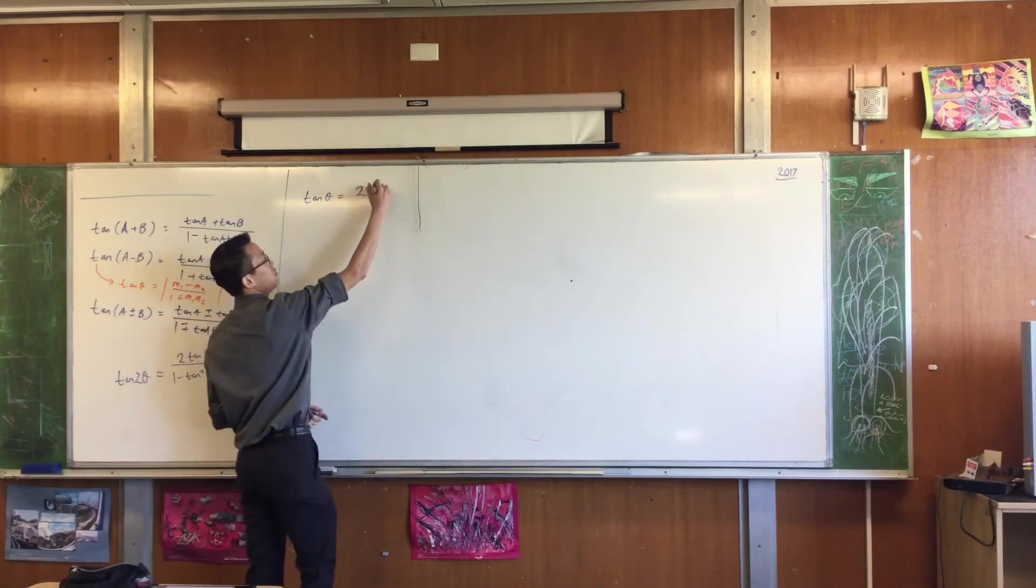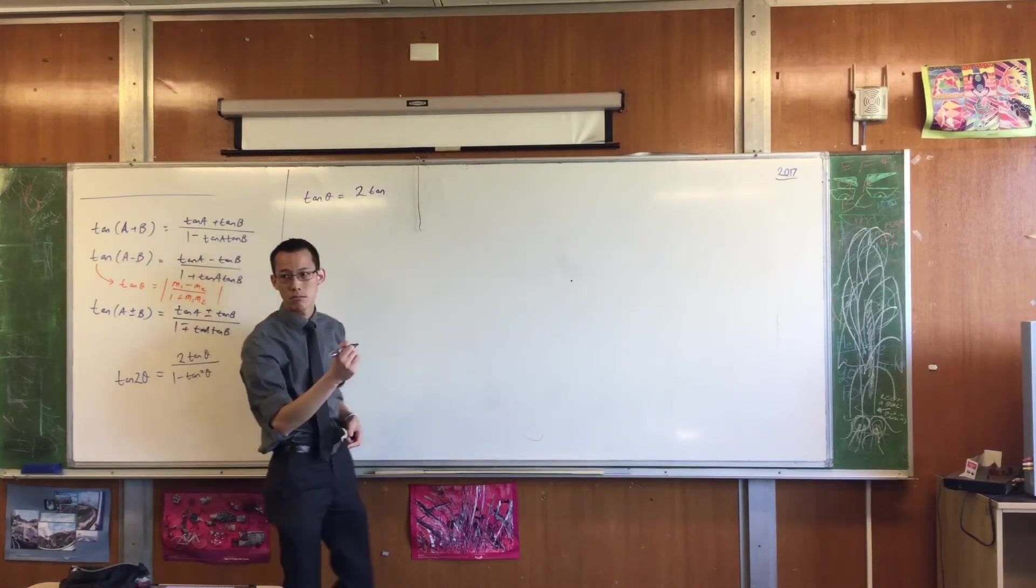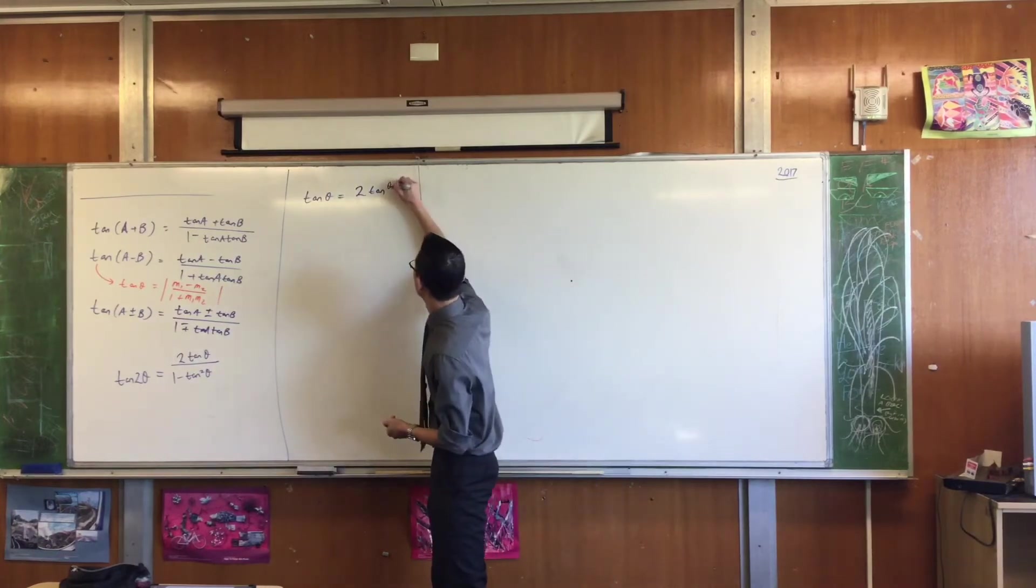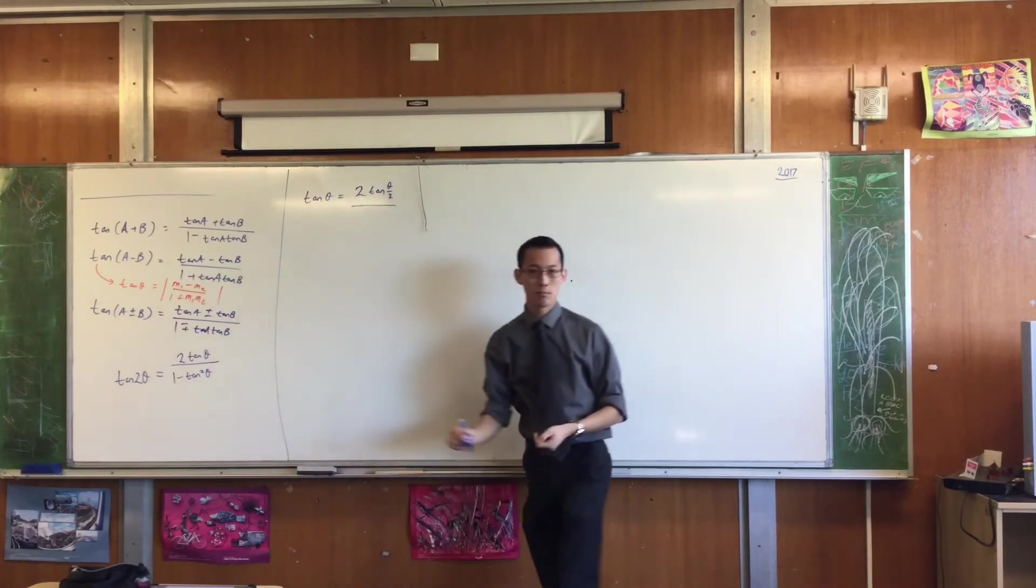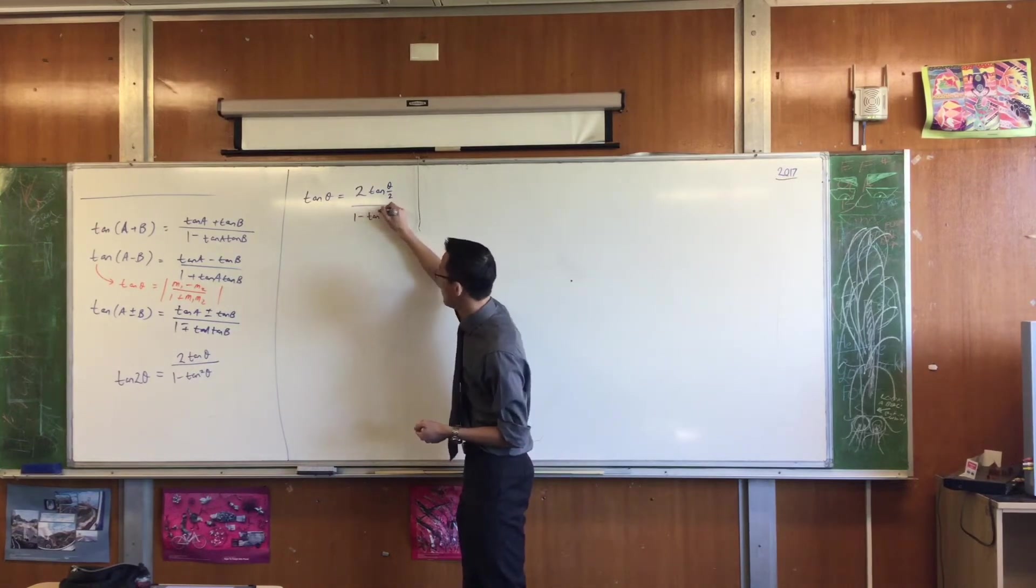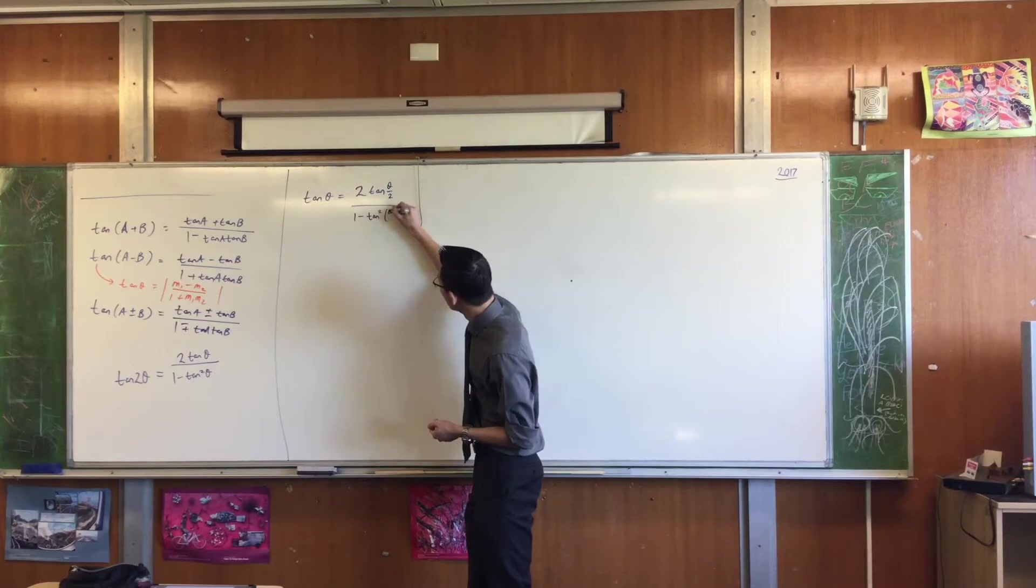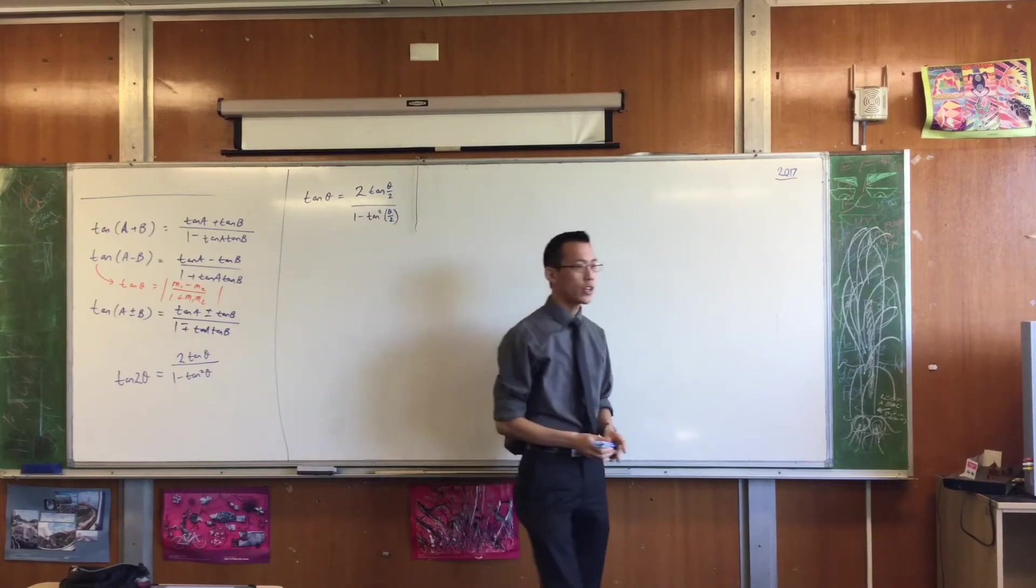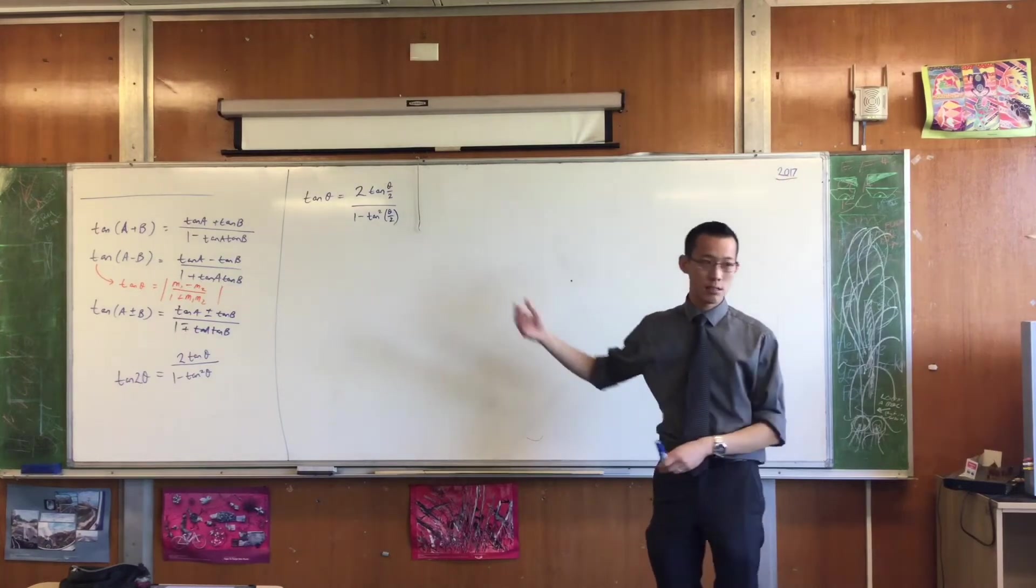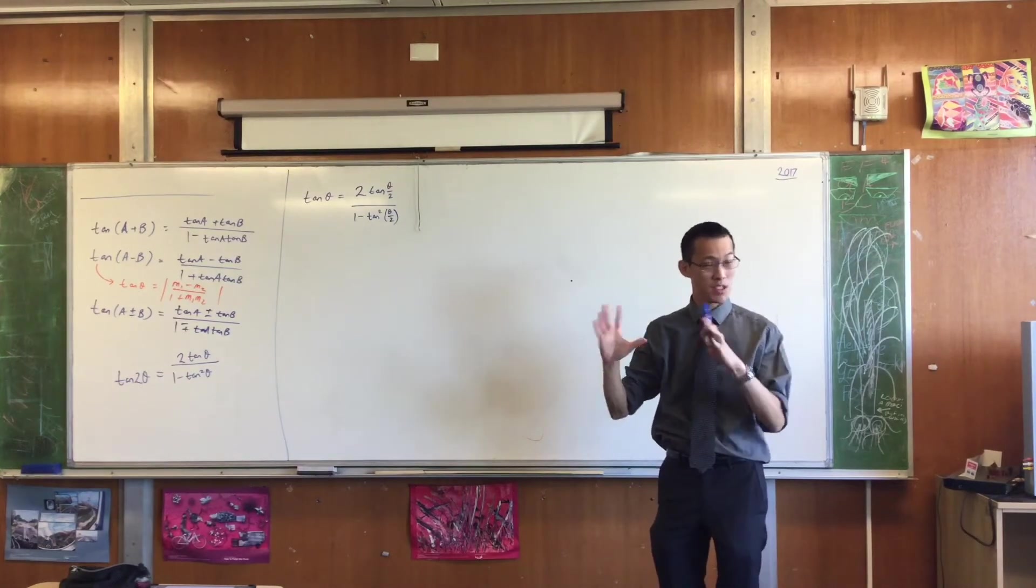So here's what I'm going to write. 2 tan what? Half θ or θ/2. That's on the top. What's on the bottom? 1 minus tan squared θ/2. So we call this guy the half angle identity for tan. It's the double angle identity just dressed up in slightly different clothes.